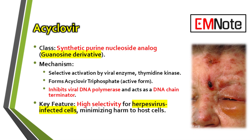Subsequently, host cellular kinases take over, adding two more phosphate groups to form the active metabolite acyclovir triphosphate. This triphosphate form is a potent competitive inhibitor of viral DNA polymerase, the enzyme responsible for replicating viral genetic material. Furthermore, when it is mistakenly incorporated into the growing viral DNA chain, the absence of a 3' hydroxyl group on the acyclovir molecule causes chain termination — a dead end for the virus's replication process. This dual mechanism of inhibition and chain termination effectively halts viral proliferation, mitigating the clinical manifestations of the infection.